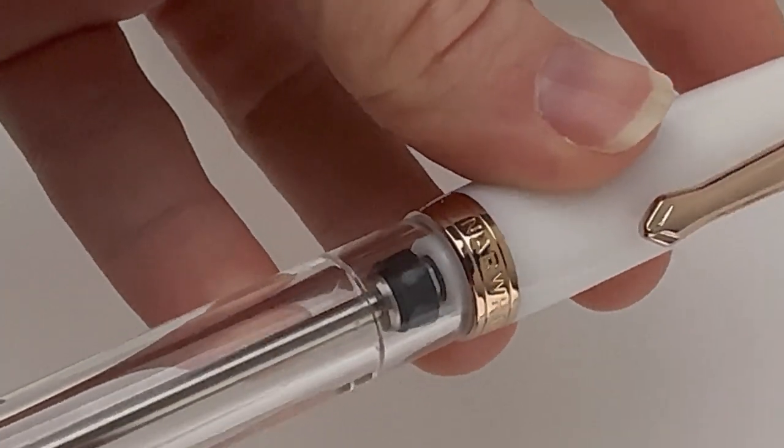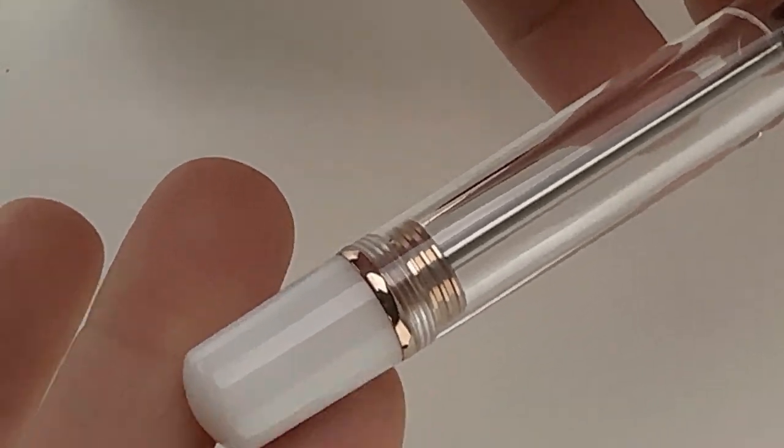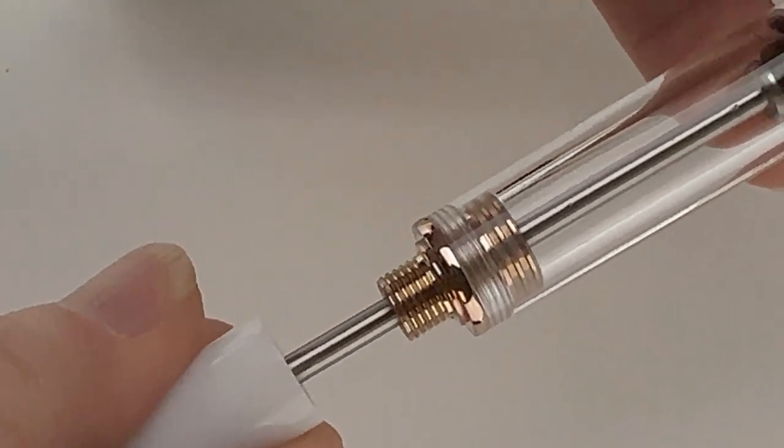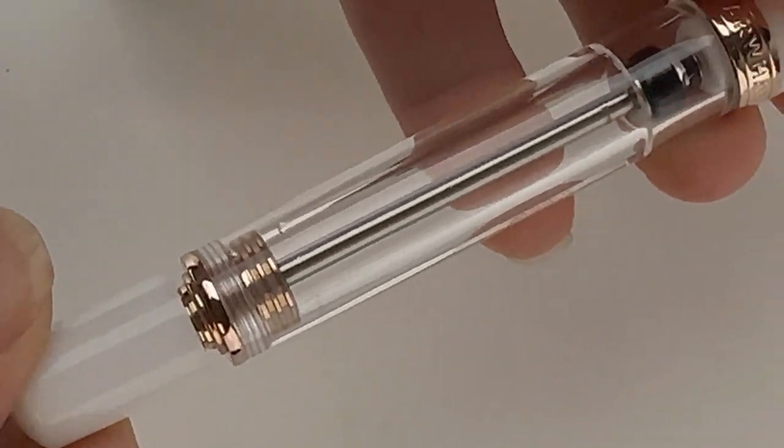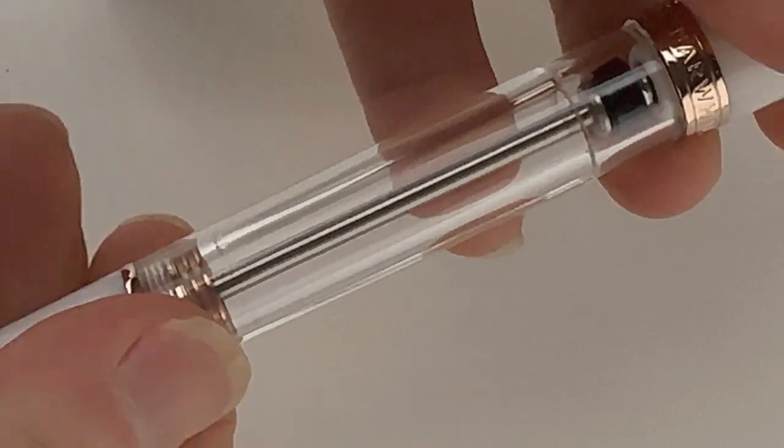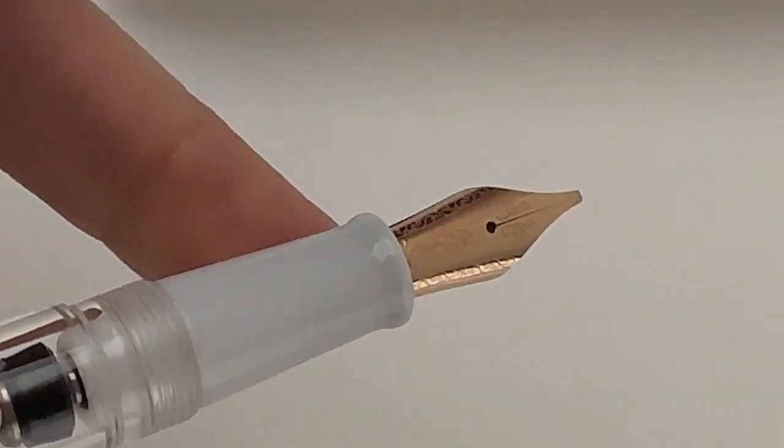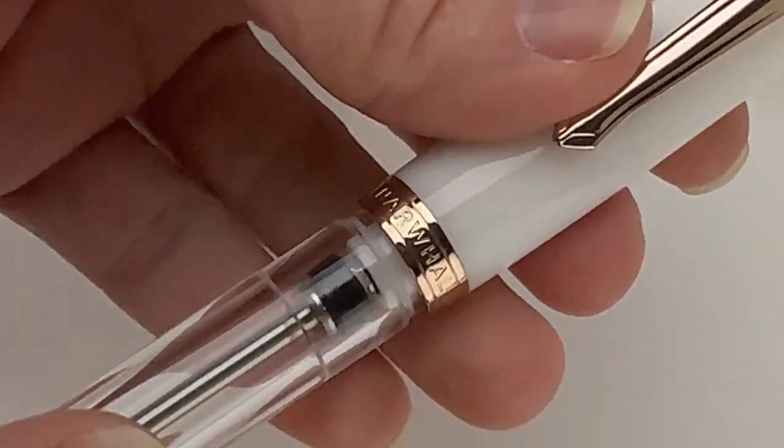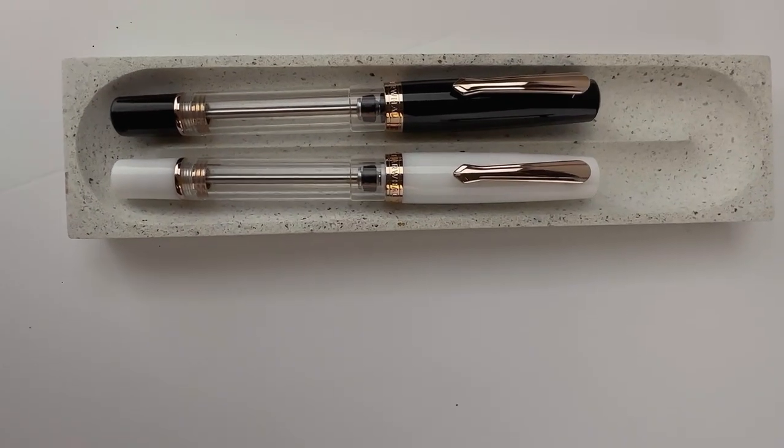So these two colors are going to be limited to 500 pieces each. The white version has the same design, the vacuum filling system, and then has the solid resin at the back end of the barrel, the cap, and the section. It also comes with that rose gold trim with the accompanying rose gold plated stainless steel nib. That's a threaded cap and it is postable.